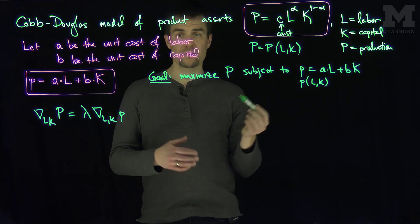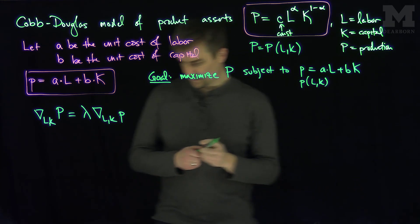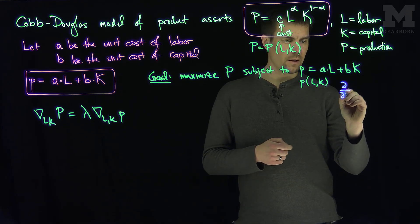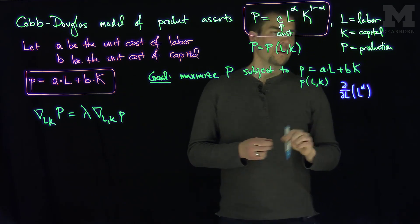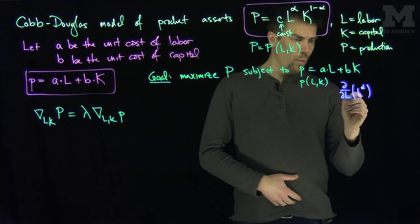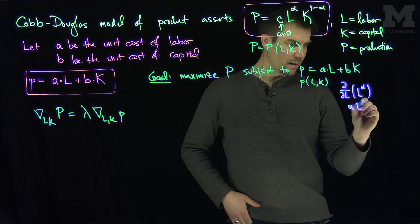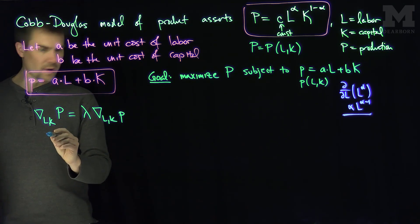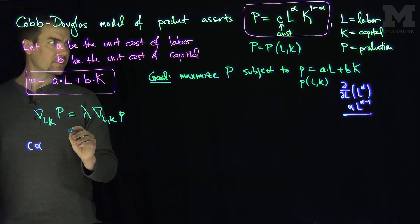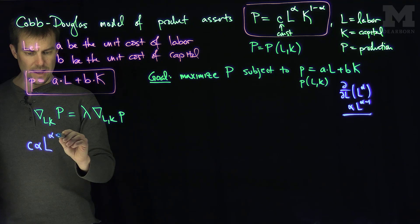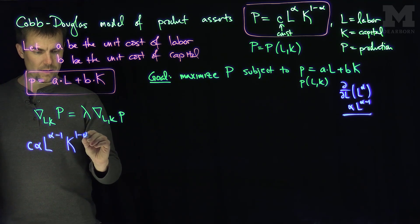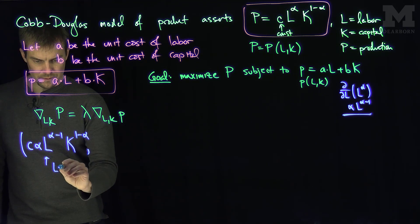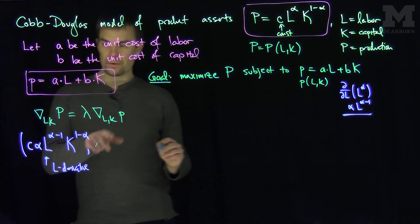We have L to the power of alpha. The derivative with respect to L of L to the alpha is alpha times L to the alpha minus one, using the power rule. So on the left-hand side, the L-derivative gives us alpha·C·L^(α-1)·K^(1-α).